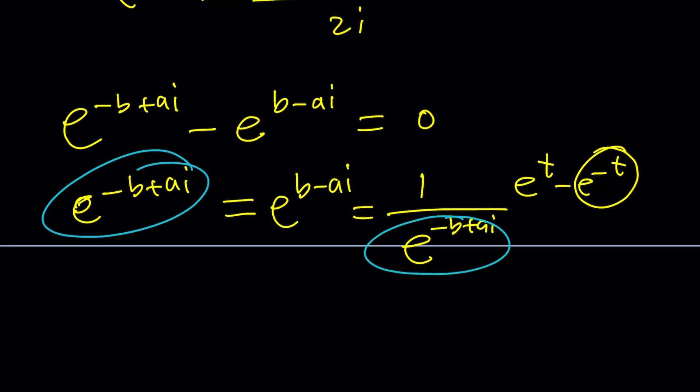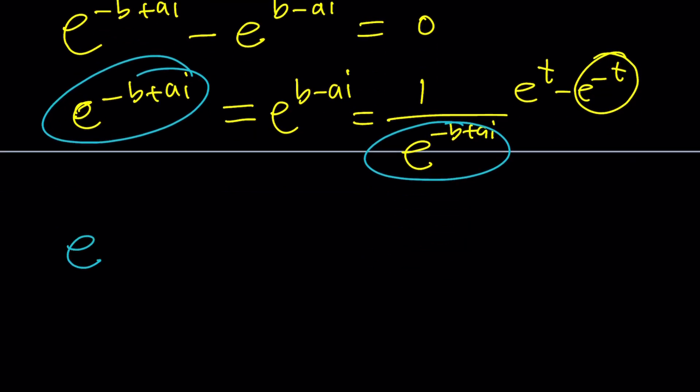Cross multiply. You're going to get e to the power of this plus that, which is same thing twice. Negative 2b, or not 2b. Allow me to make that joke real quick. Plus 2ai equals 1.